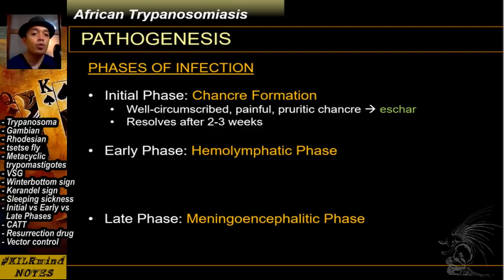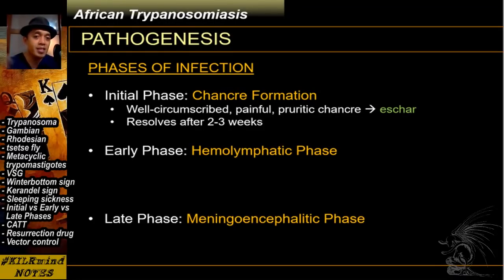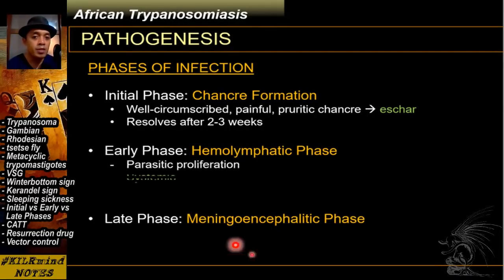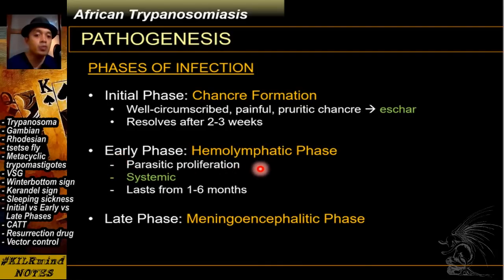During the initial phase, you have a well-circumscribed, painful, and pruritic chancre which eventually develops into an eschar. This is due to the bite site of your tsetse fly. However, this chancre resolves roughly around two to three weeks, and after a few days the early phase begins.